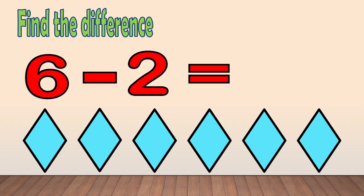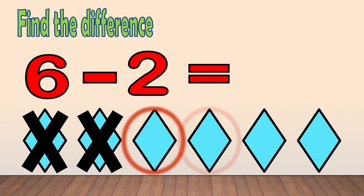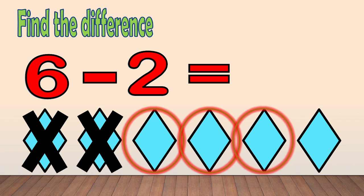Another one: 6 minus 2. Here, we have 6 diamonds. And then, we are going to take away 2 diamonds. When we take away, we cross the diamonds: 1, 2. Now, let's count how many are left: 1, 2, 3, 4. So, 6 minus 2 equals 4.